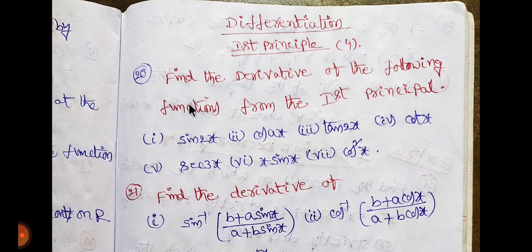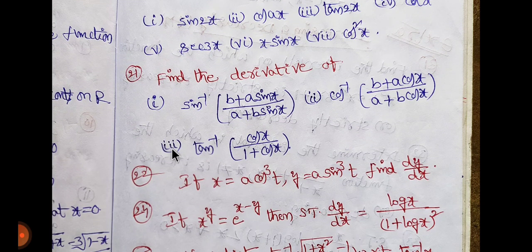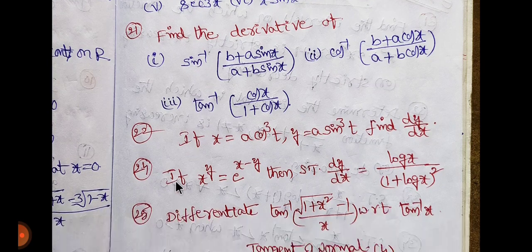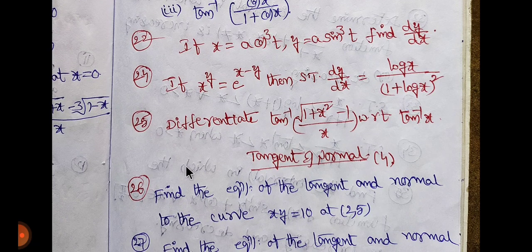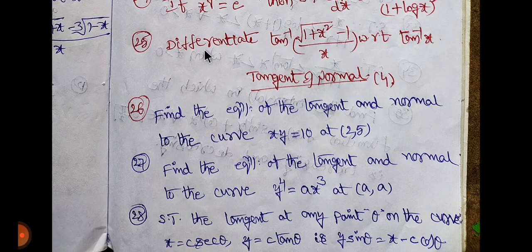Continuity. First principle. Okay, seven or eight - mostly first principle. Missed A. Next, this model - income, parametric formula. Next, log.